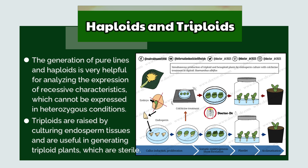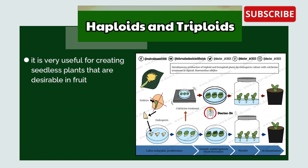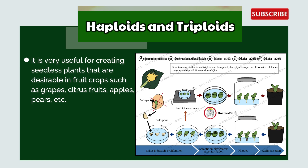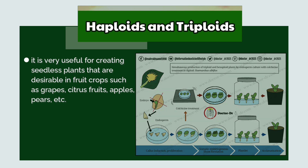Triploids are raised by culturing endosperm tissues and are useful in generating triploid plants which are sterile. This is very useful for creating seedless plants that are desirable in fruit crops such as grapes, citrus fruits, apples, pears, etc.